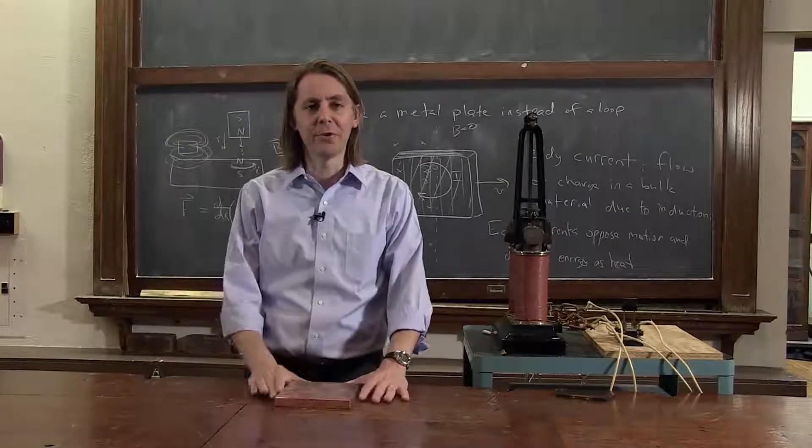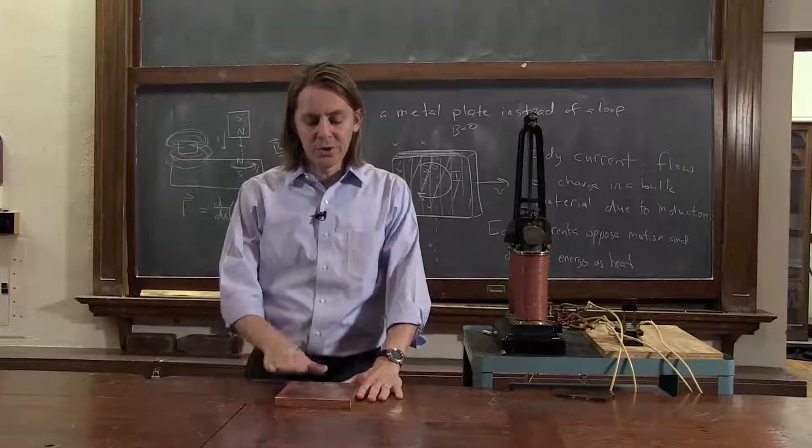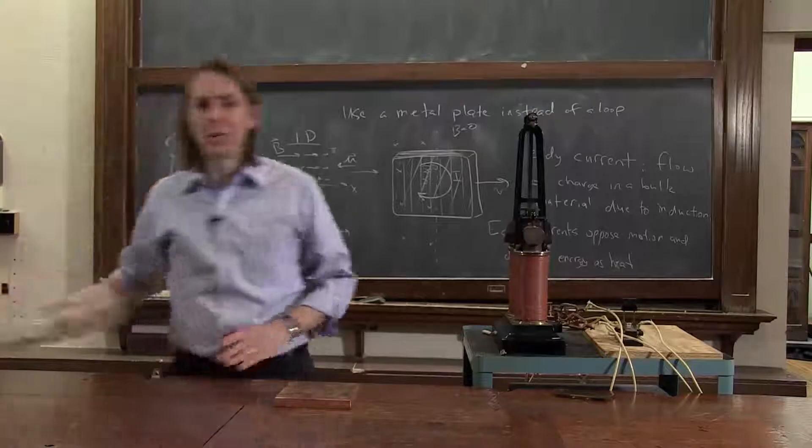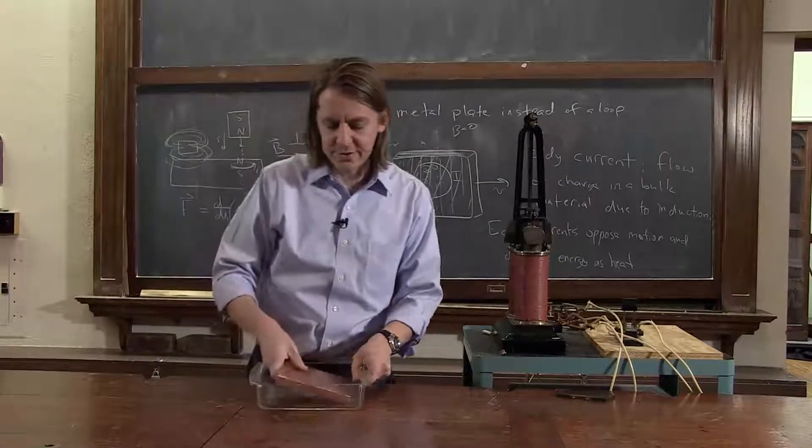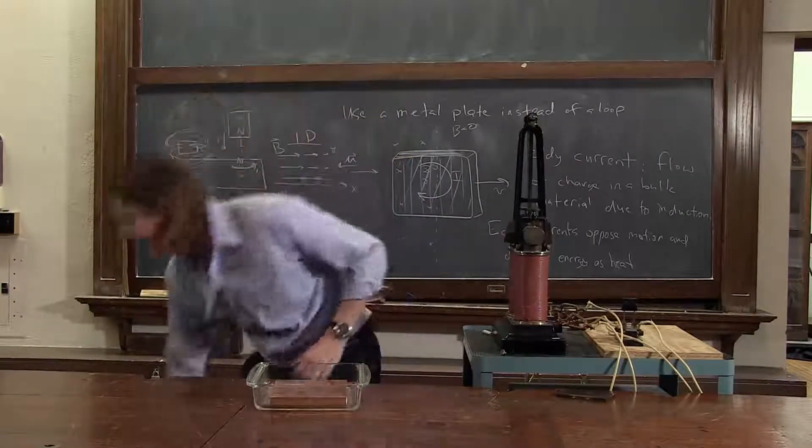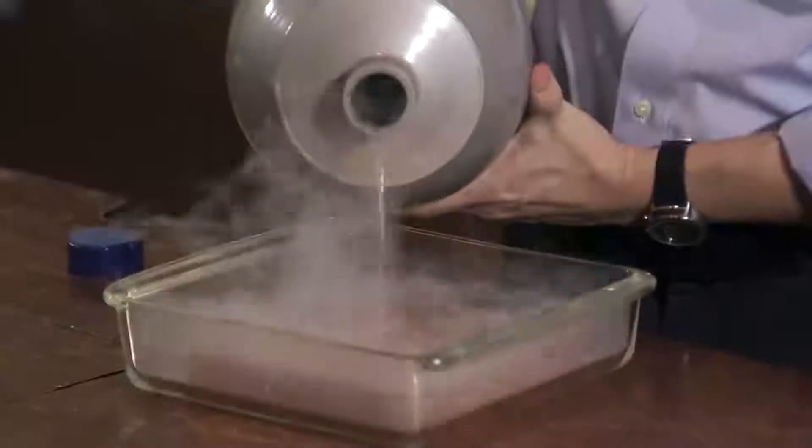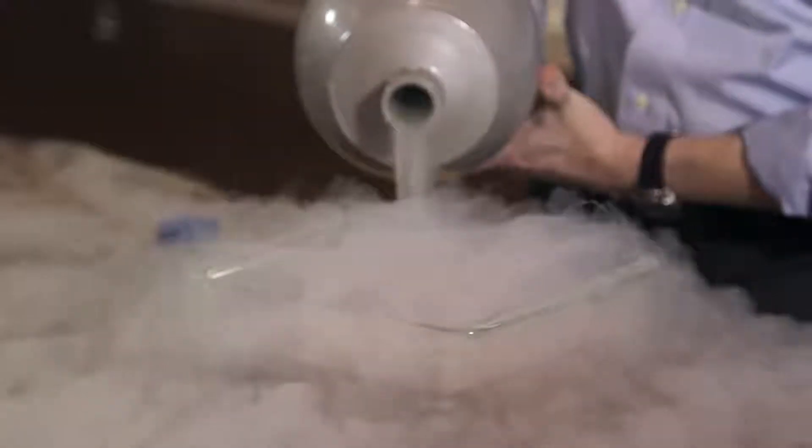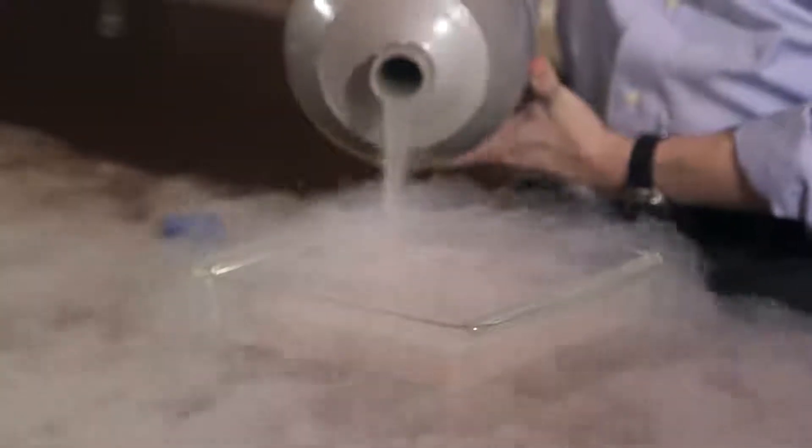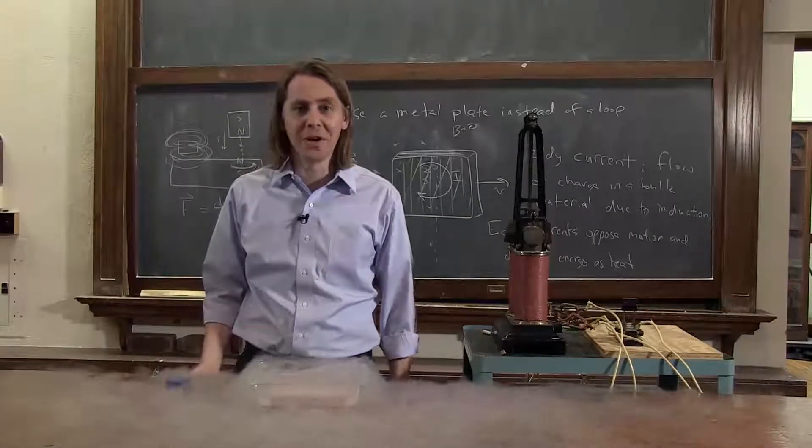So since eddy currents depend on the material's resistivity, if we can change the resistivity, we might change the effect. So what we're going to do is take our copper block and freeze it to greatly reduce its resistivity. So here I'm going to put it in this Pyrex dish, and we'll pour liquid nitrogen over it and let it cool off. Really submerge it and let it go. There you can see it boiling away the liquid nitrogen because to the liquid nitrogen it's pretty warm. This takes a while, so we'll be back in a minute.